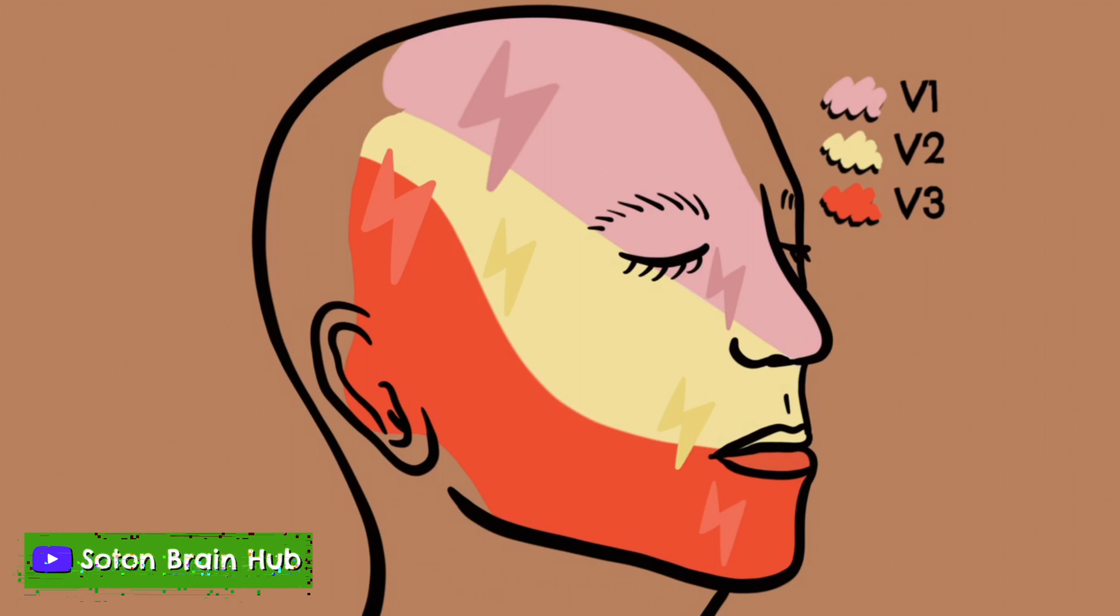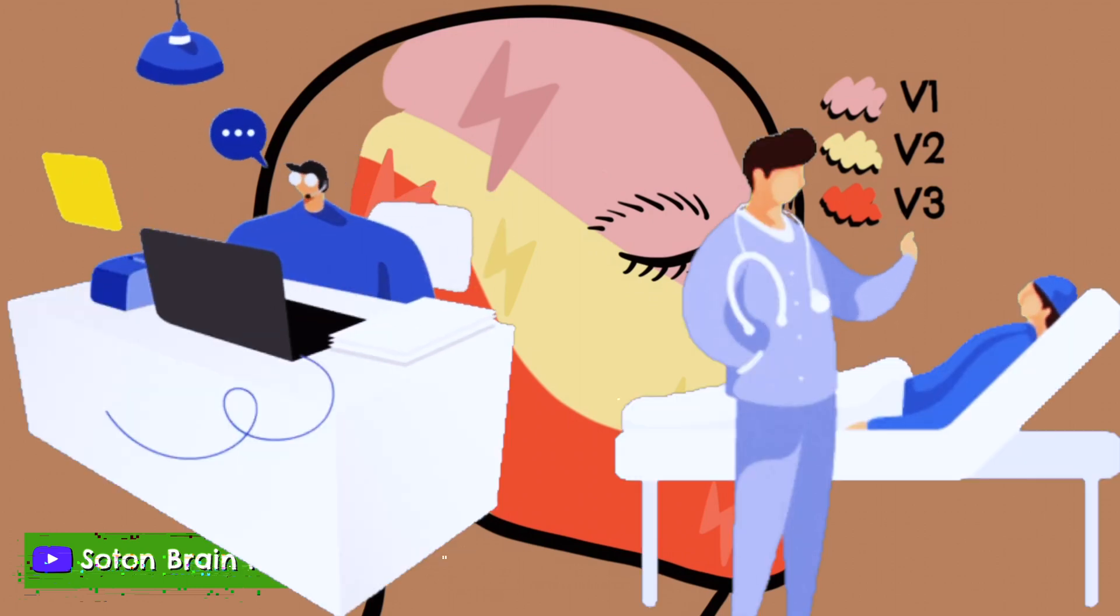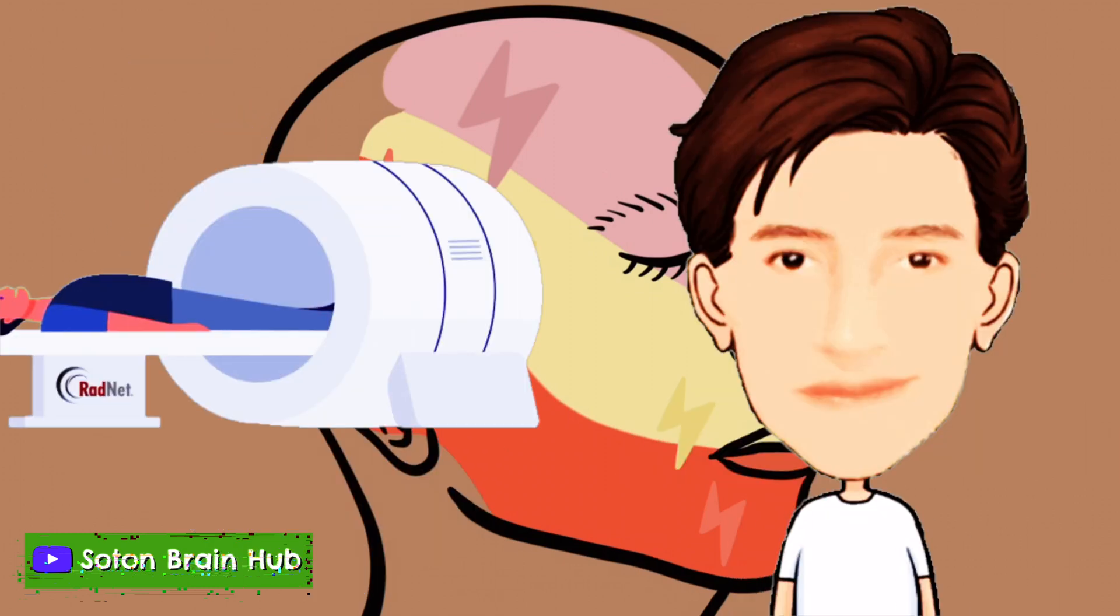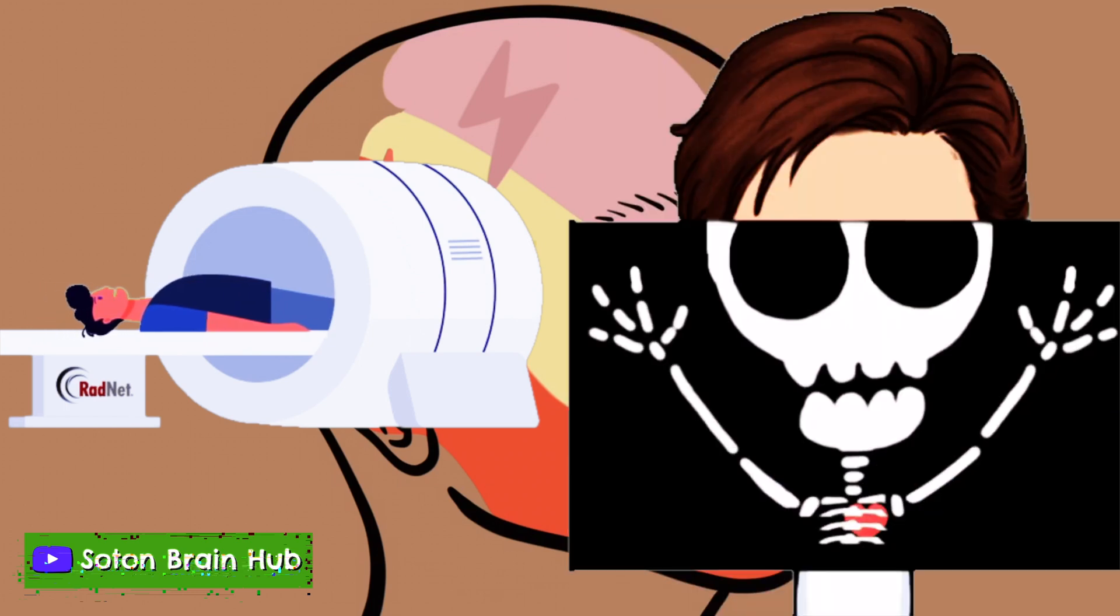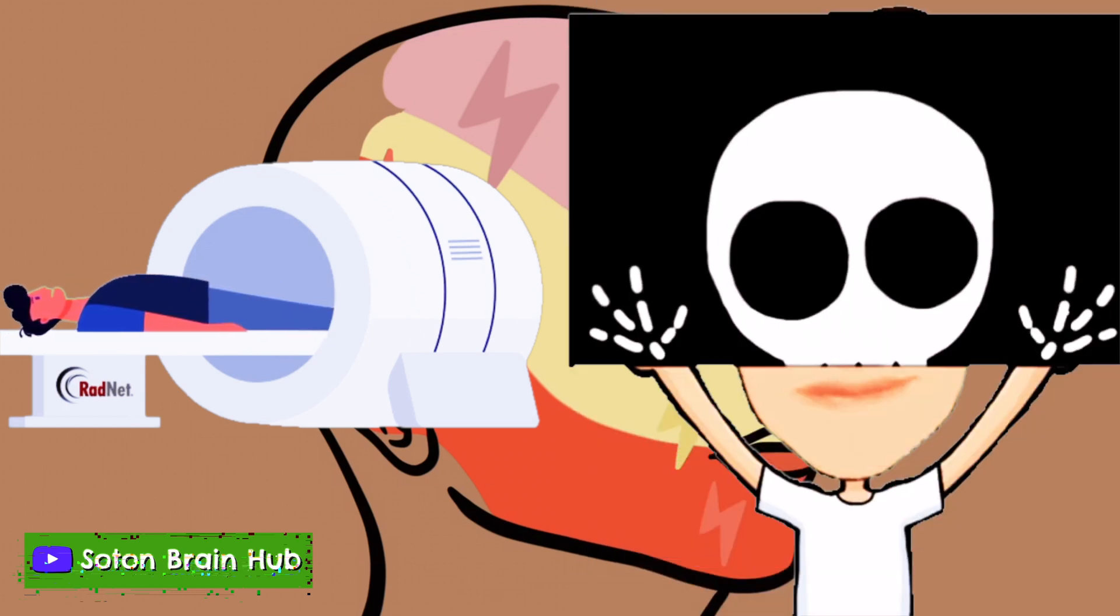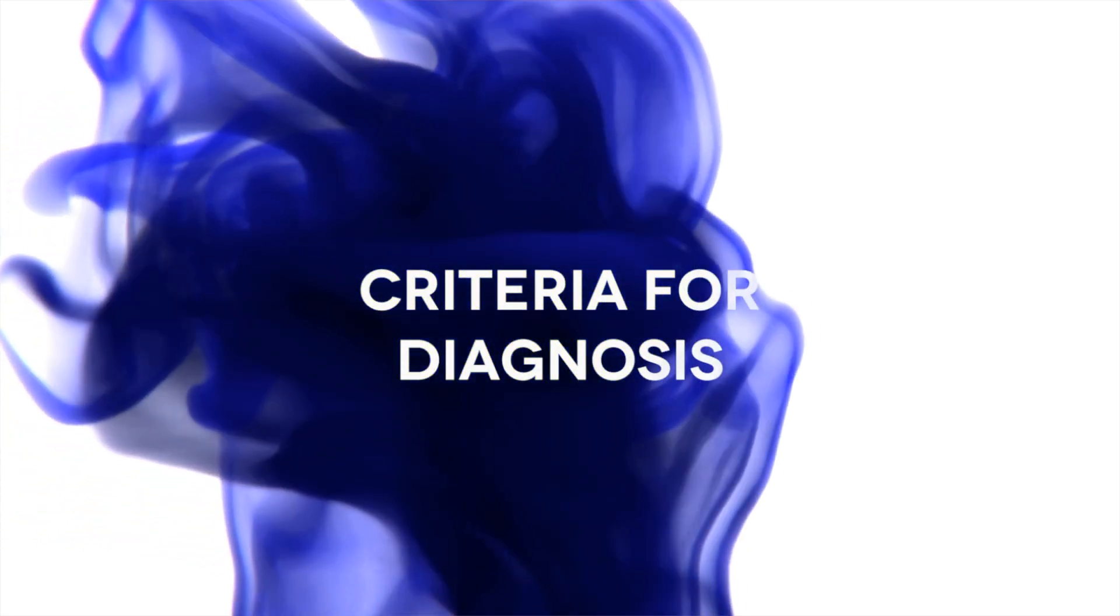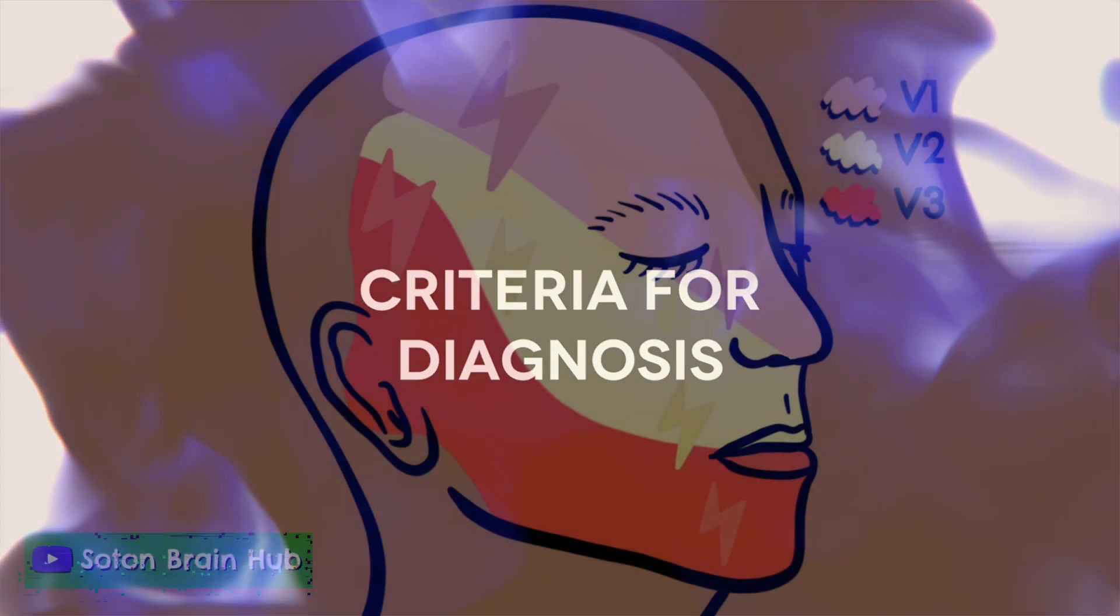Trigeminal neuralgia is a clinical diagnosis based on patient history and clinical examination. MRIs are used to differentiate between classical or secondary neuralgia and to track neuroanatomical changes to the trigeminal nerve.